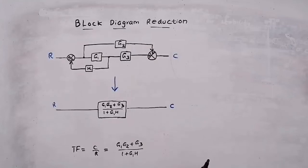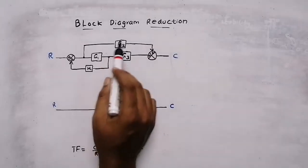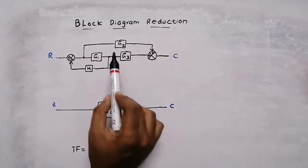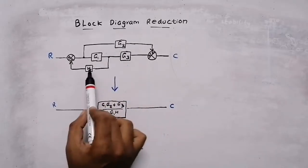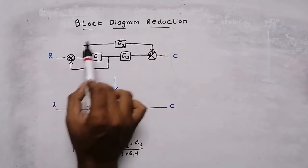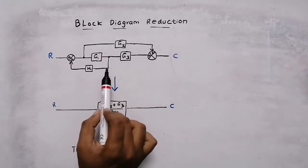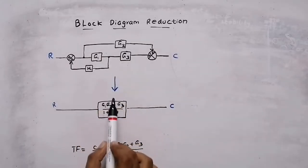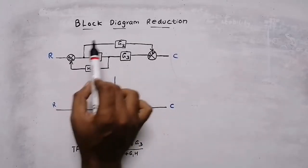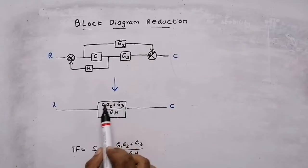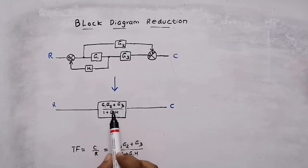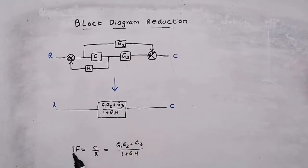In this video, we are going to discuss the rules for doing block diagram reduction. In this question, there are one, two, three, and four blocks. These four blocks can be converted into a single block — that means a complex diagram can be converted into a simple diagram, from which we can find the overall transfer function of the system.